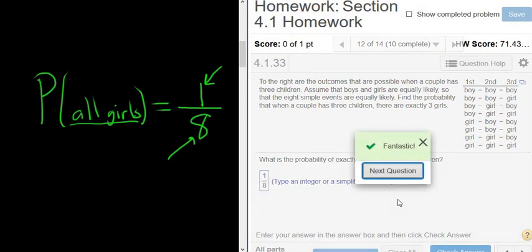Just for fun, let me show you how I knew it was 8. So if a couple's having three kids, say this is the first kid, this is the second kid, and this is the third kid.